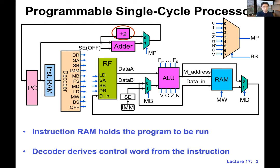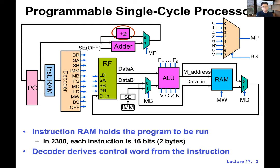You might have noticed that I increment the PC by plus two here rather than plus one. The main reason is that in our 2300 microprocessor and memory system, we assume instruction memory holds two-byte instructions — 16 bits per instruction — and our memory system is byte-addressable, meaning each memory address points to a byte, not a two-byte word. Since each instruction takes two bytes in memory, we do PC plus two.